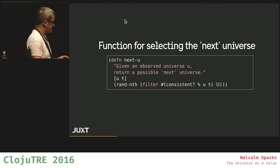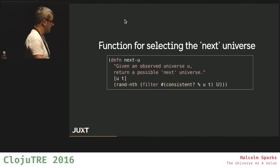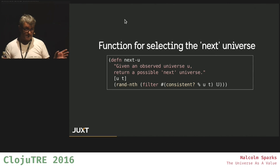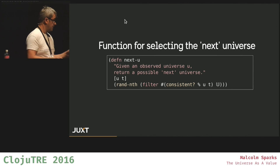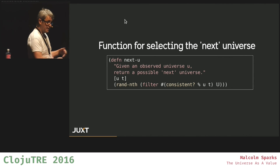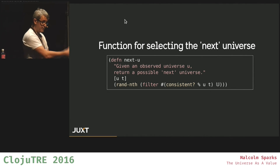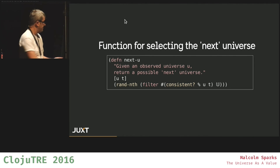And then we're going to filter them. I've used a function in Clojure called rand-nth, which is going to pick one at random. Now, if you're still clinging onto the idea of free will, you're free to replace that with a free will function or put free will in as a parameter.